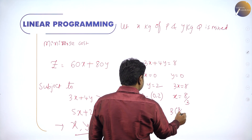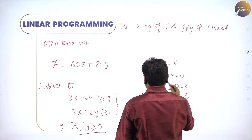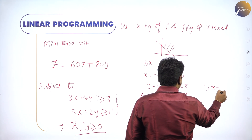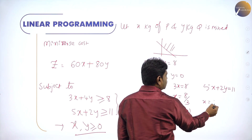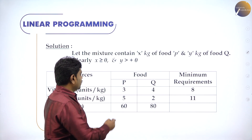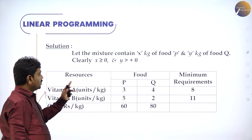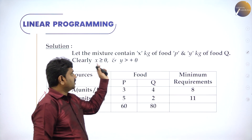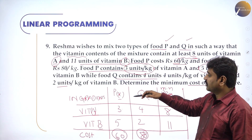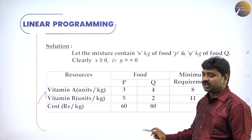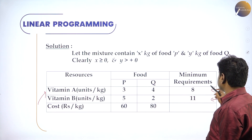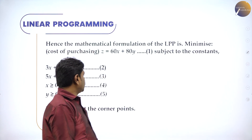For the first line 3x + 4y = 8: put x = 0, y = 2, so point A is (0, 2); put y = 0, x = 8/3, so point B is (8/3, 0). Since the constraint is greater than or equal to, shade above the line. For the second line 5x + 2y = 11: put x = 0, y = 11/2. This is the table with vitamin A, vitamin B, cost, and resources for foods P and Q, and the assumption that the mixture contains x kg of P and y kg of Q.